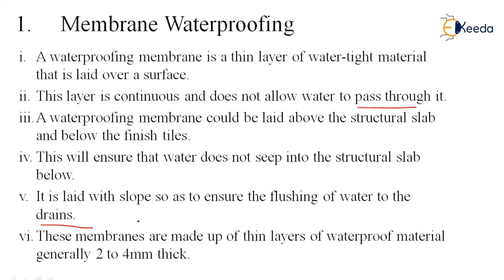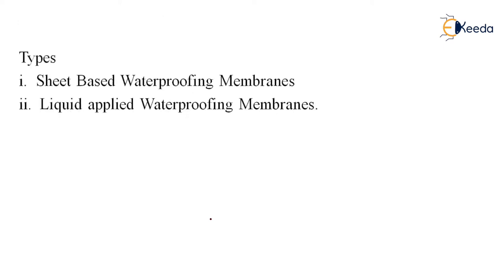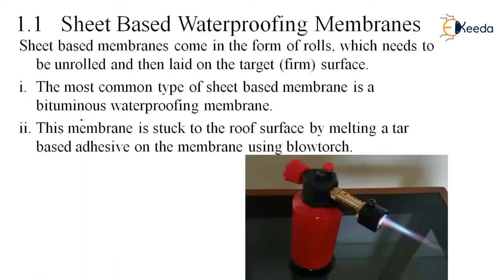These membranes are made up of thin layers, about 2 to 4 mm thickness, and they are of two types: a sheet-based waterproofing membrane and the liquid applied waterproofing membrane. For the sheet-based waterproofing, we purchase the sheet, paste it on the surface, and it is ready to use.